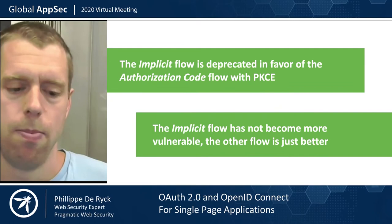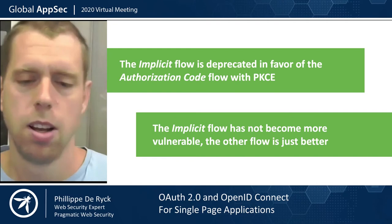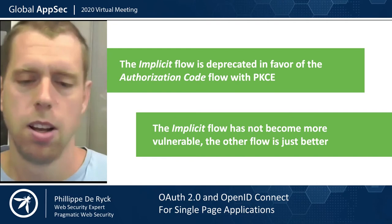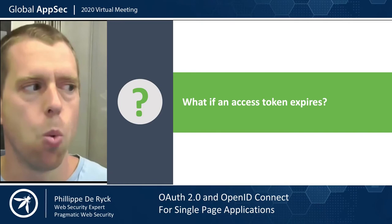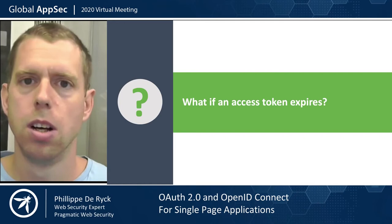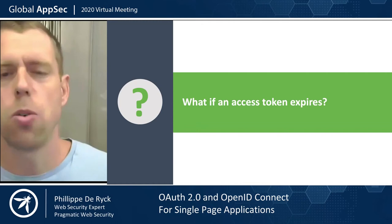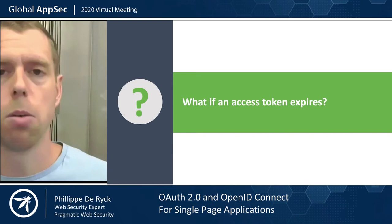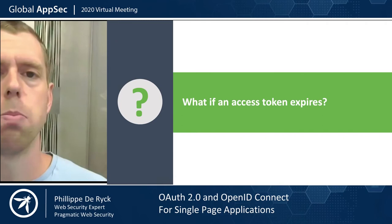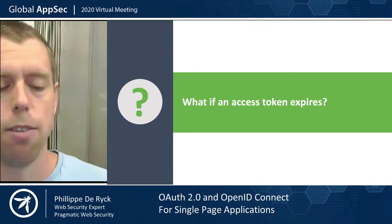In the second part, I'm going to be asking and answering questions where we dig deeper into certain cases. The first question is: what if an access token expires? Access tokens in the front end are somewhat vulnerable — they're in a browser, and browsers are not the most secure environment. That's why access tokens for front end applications accessing APIs should have a limited lifetime — five minutes, ten minutes. That means the access token will expire and the front end will no longer be able to access that API.